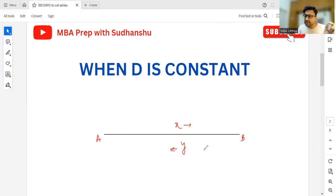Whenever distance is a constant, then the average speed is given as harmonic mean of the two speeds. So here the average speed will become 2 upon (1 by x plus 1 by y).